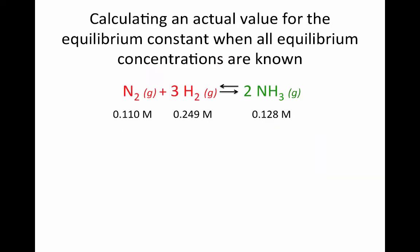If you know all of the equilibrium concentrations for every species in your chemical reaction, then it's very easy to calculate the value of your equilibrium constant. Here's a very famous reaction, the Haber-Bosch reaction, which is used to create ammonia. We've got one mole of nitrogen gas reacting with three moles of hydrogen gas to make two moles of ammonia gas, and you can see the concentrations at equilibrium given below the chemical equation.